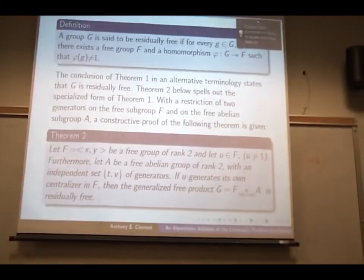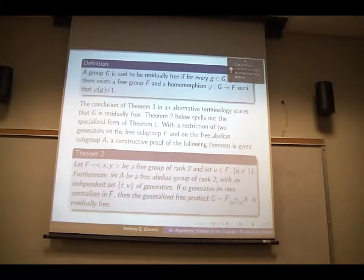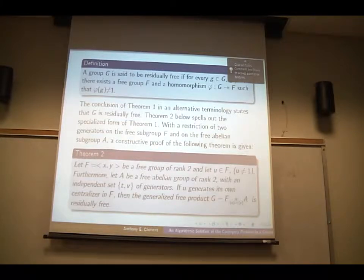So, definition, well, everyone knows how you define a group to be residually free. So we're using this idea. So the conclusion of theorem one in alternative terminology states that G is residually free. So theorem two below spells out a specialized form of theorem one. So with the restriction of generators, remember it was infinitely generated here. We restrict it to two generators. And the free abelian group again to two, rank two. So we'll show that still, if we restrict this to two generators in the free group and the free abelian group, then this group is residually free. So everything remains the same except we just, instead of infinitely generated, we have rank two.